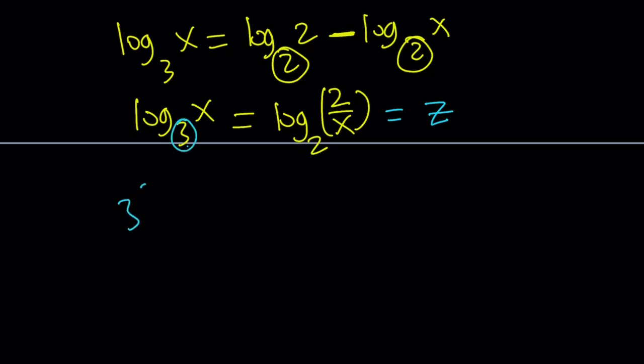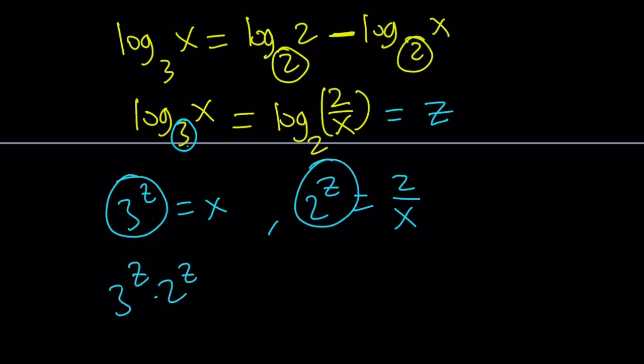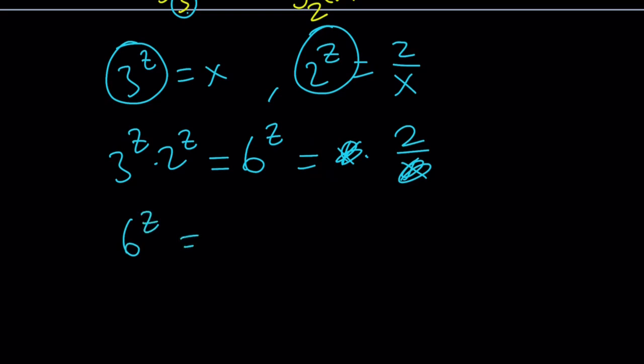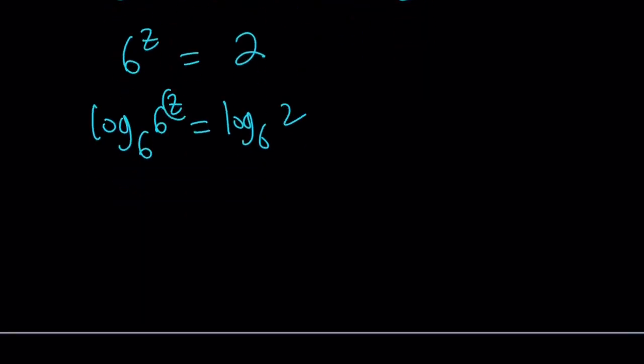So from here, we get 3 to the power z equals x, and 2 to the power z equals 2 over x. And we're going to multiply these two things together like before. Same thing, pretty much. This is 6 to the power z, but also x times 2 over x. x cancels out, and we end up with a beautiful equation: 6 to the power z equals 2. Hopefully you see what I see. To z or not to z. From here, we can log both sides, and z moves, and we get z times 1. So z becomes log 2 with base 6.